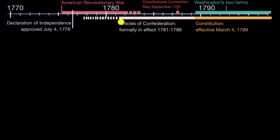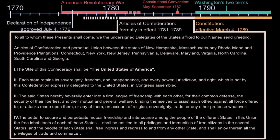These Articles of Confederation do not provide for any type of real central government. It really was a mutual defense union with a little bit of free trade, as we'll see in the text here. This is some of the beginning passages of the Articles of Confederation, and I encourage you to read the whole thing. It's actually quite interesting. But you immediately see that it has a very different tone than the one that we see in the U.S. Constitution.